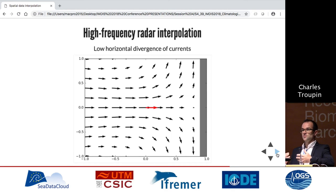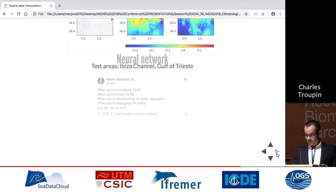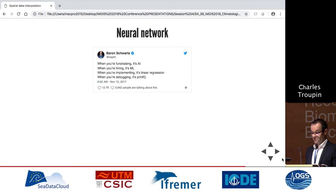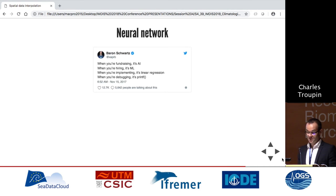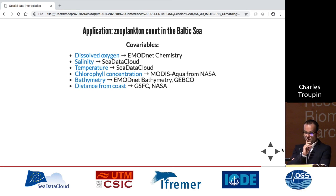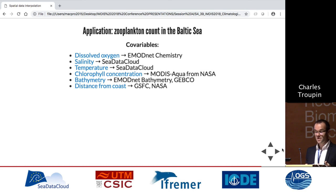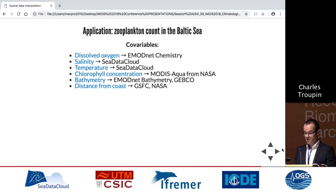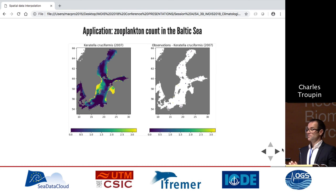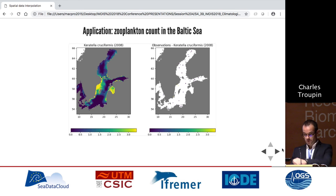More recently, we used neural networks. As the joke goes: when you're fundraising it's AI, when you're hiring it's ML, and when you're implementing it's linear regression. But we did something serious: using neural networks to interpolate zooplankton counts in the Baltic Sea. The principle is to use co-variables — salinity, temperature, chlorophyll, bathymetry — and derive relationships between the main variable and these co-variables using the neural network. Very fresh results were just produced: gridded Acartia clausi concentration counts in the Baltic Sea.